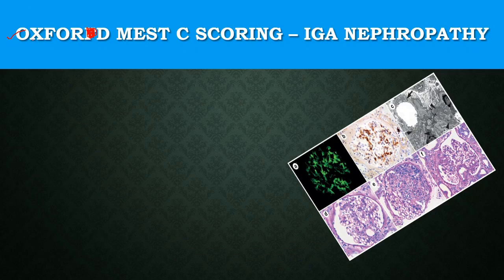This video covers the Oxford MEST-C scoring system, which is used in IgA nephropathy. These videos are being made as preparation for a DM exam, just to revise at the final moment. In this video, we will see just the MEST-C scoring system and a few images.